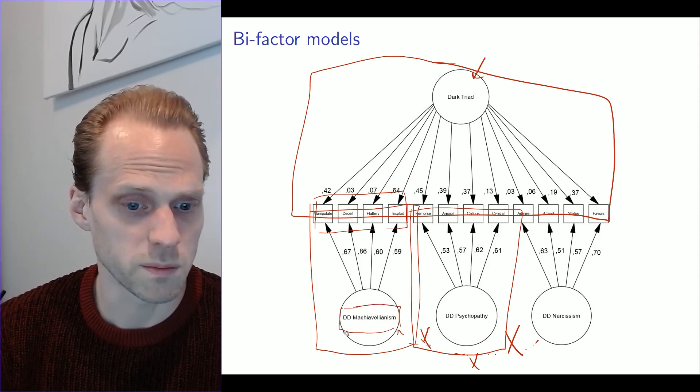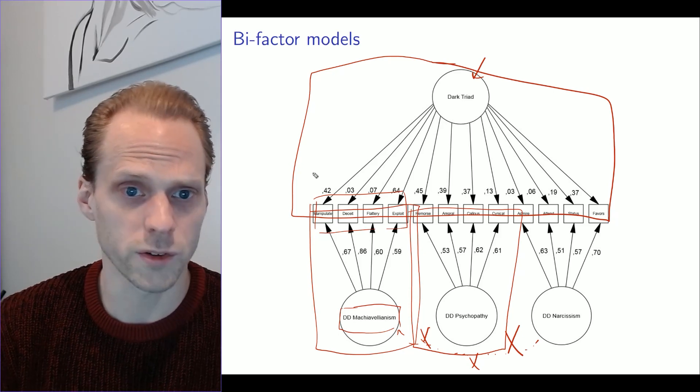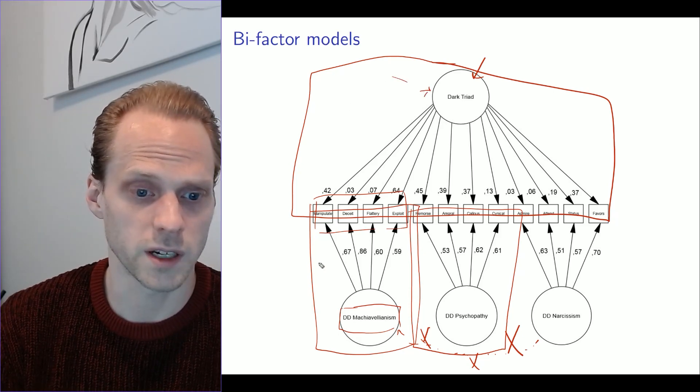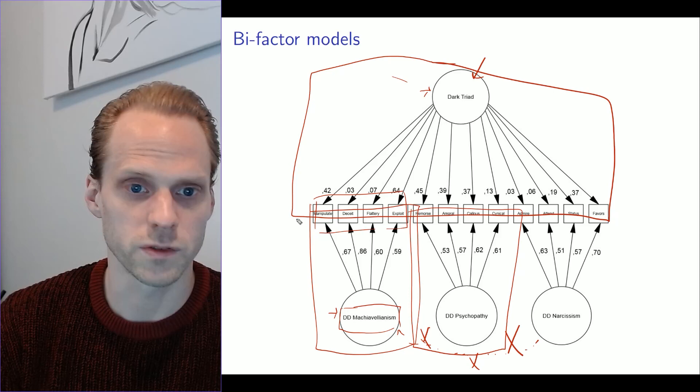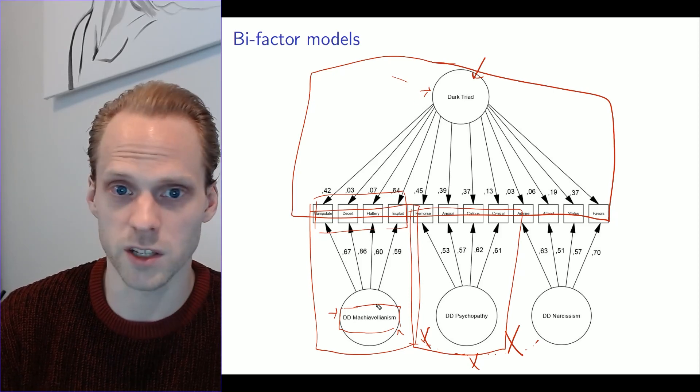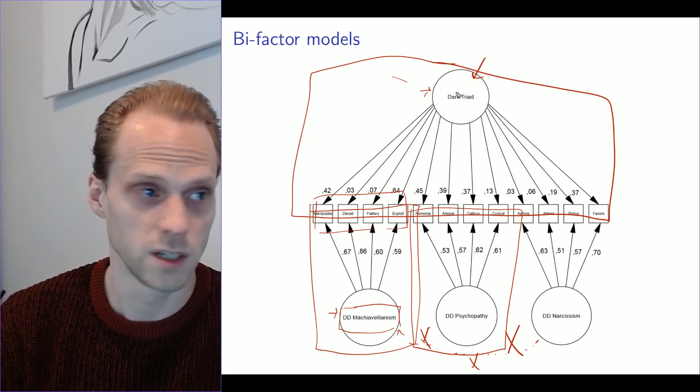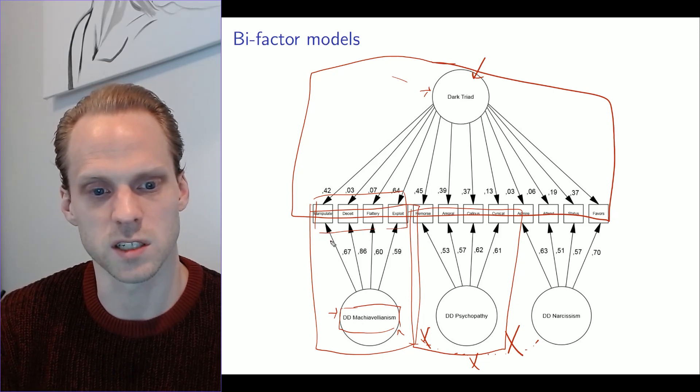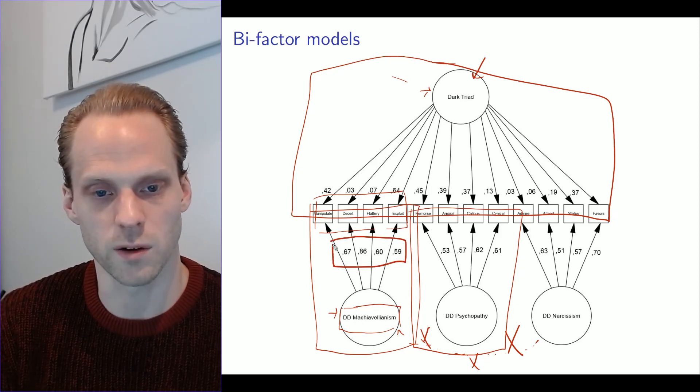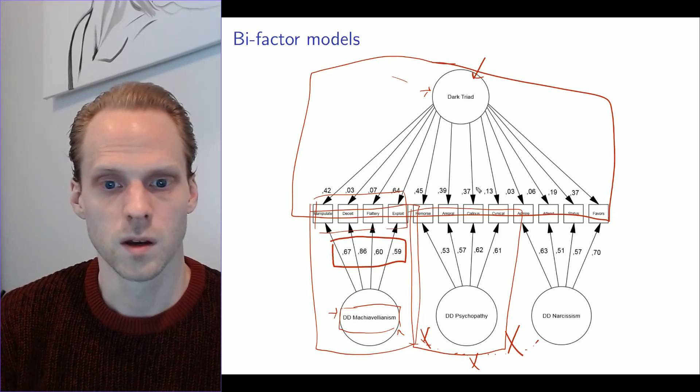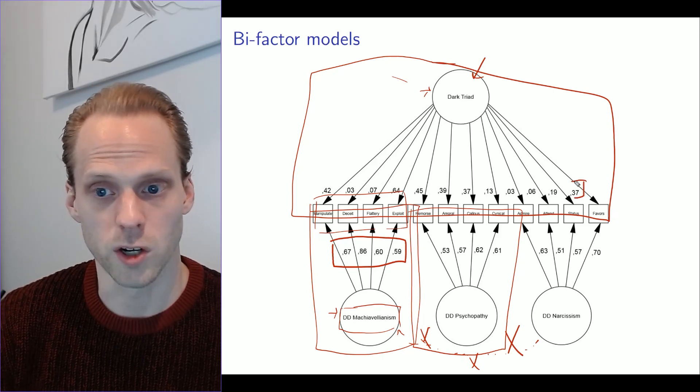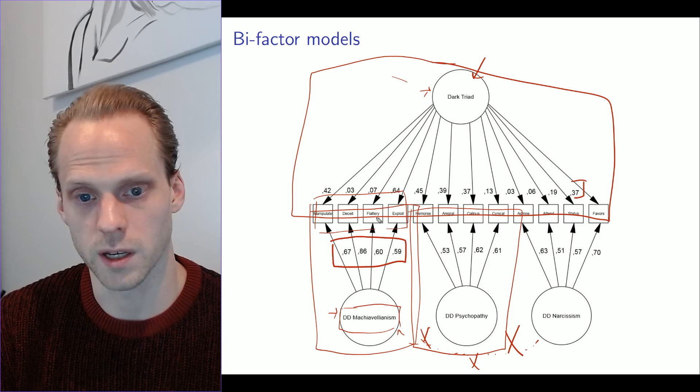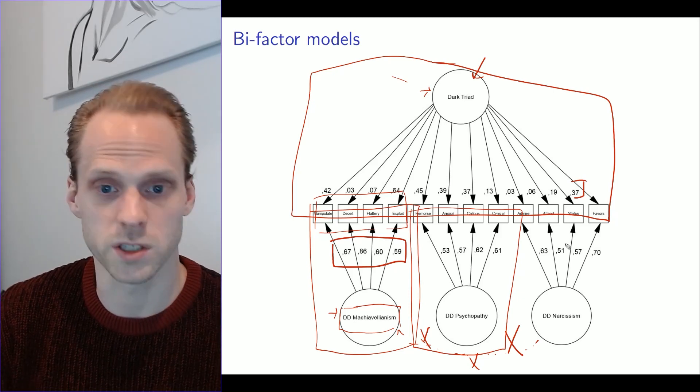Now you have to realize that this is Machiavellianism after controlling for dark triad. So in the G models, we have like subdomains of intelligence after controlling for intelligence. So it's more of a residual factor than actually the factor itself. So that makes the interpretation of these factor loadings pretty hard. But the general factor we can interpret as being the general factor that causes covariation across the scale.